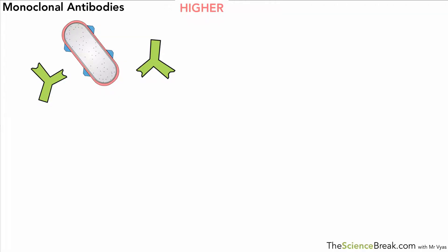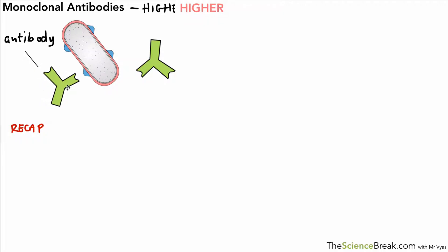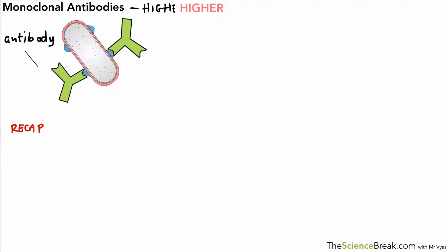Hello, today we're going to talk about monoclonal antibodies. This video is for the higher tier biology course only, not for the combined science course. As a quick recap on antibodies, the body's immune system — specifically white blood cells — makes antibodies, which have a very specific shape on part of their structure that can attach to what we call an antigen found on a bacterium or pathogen.